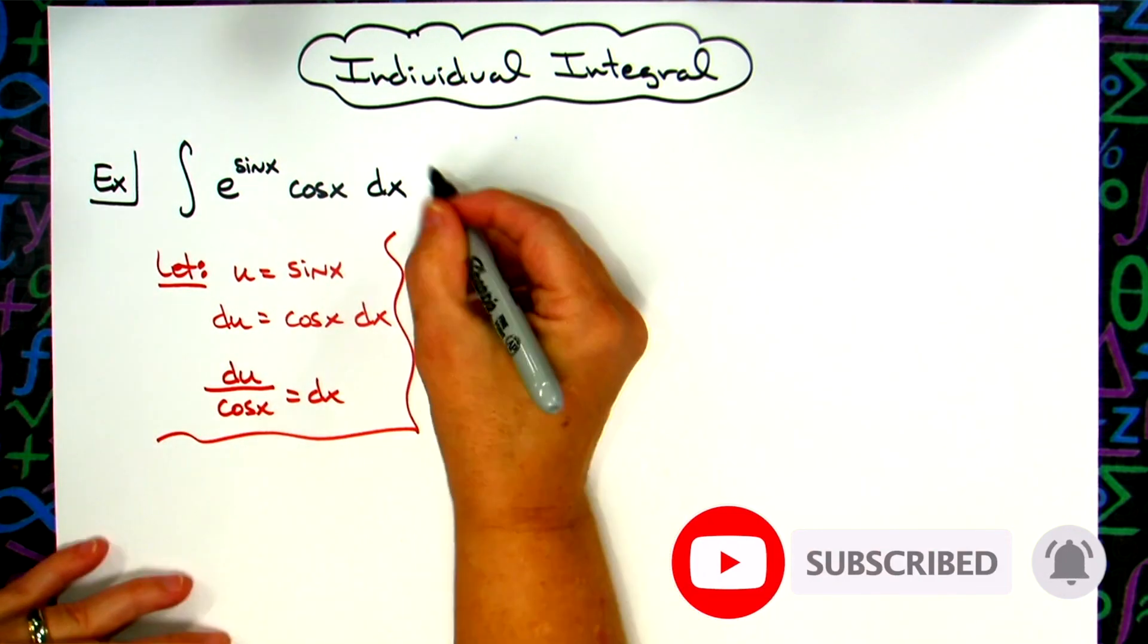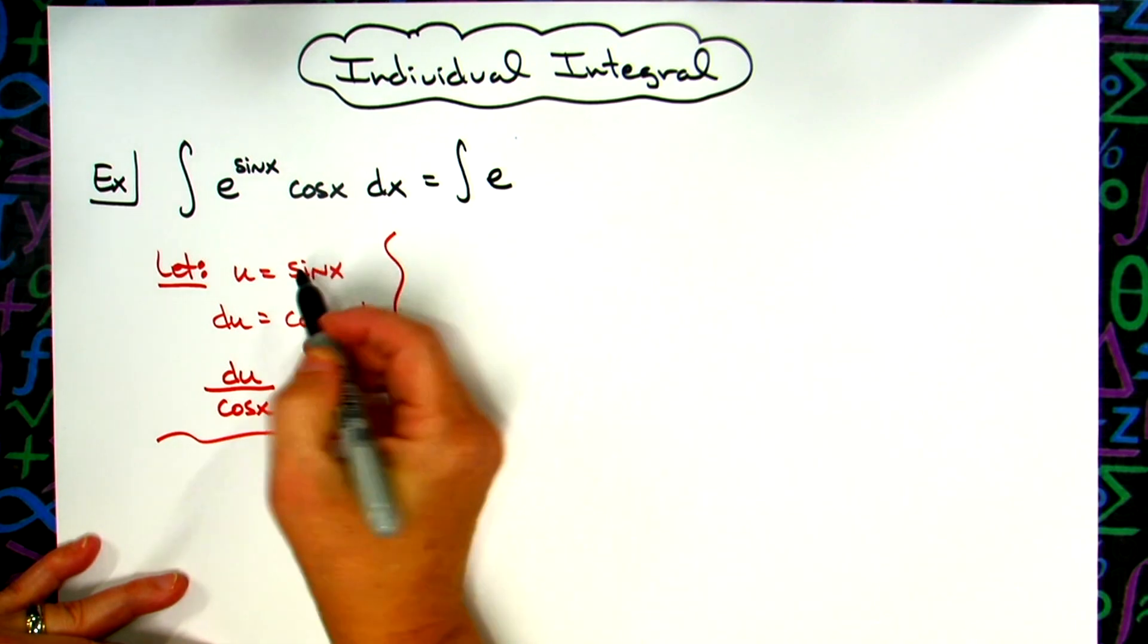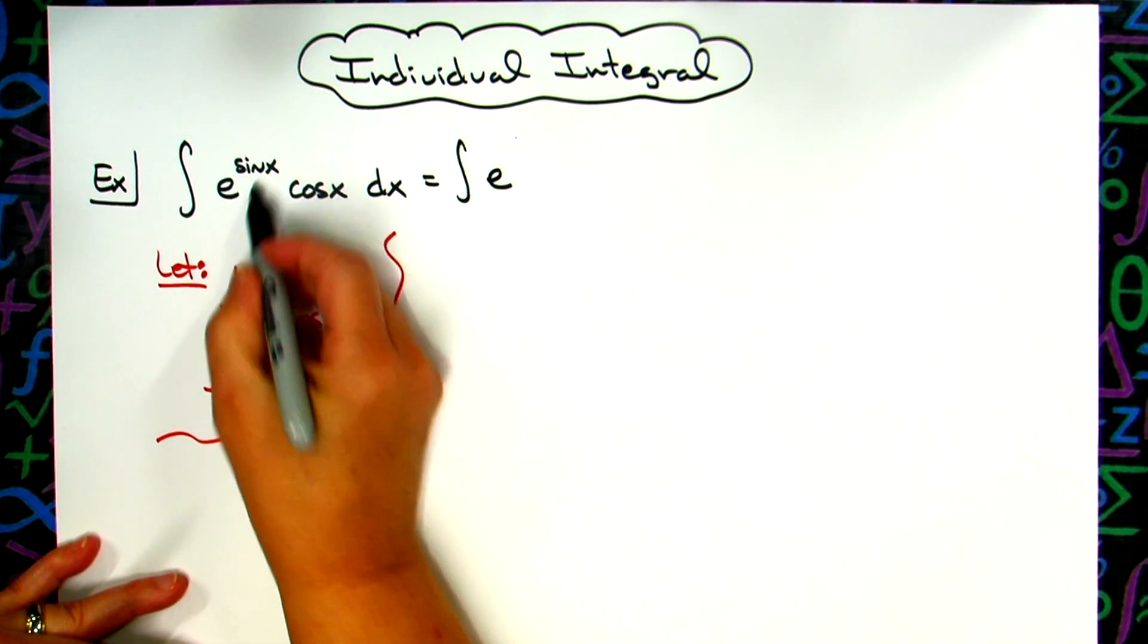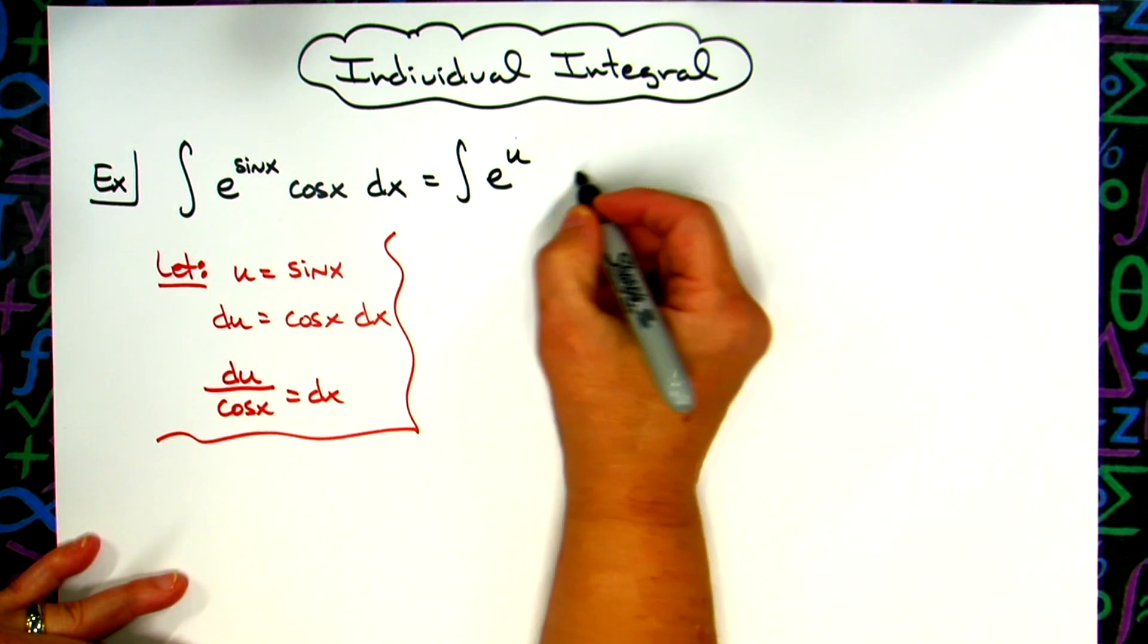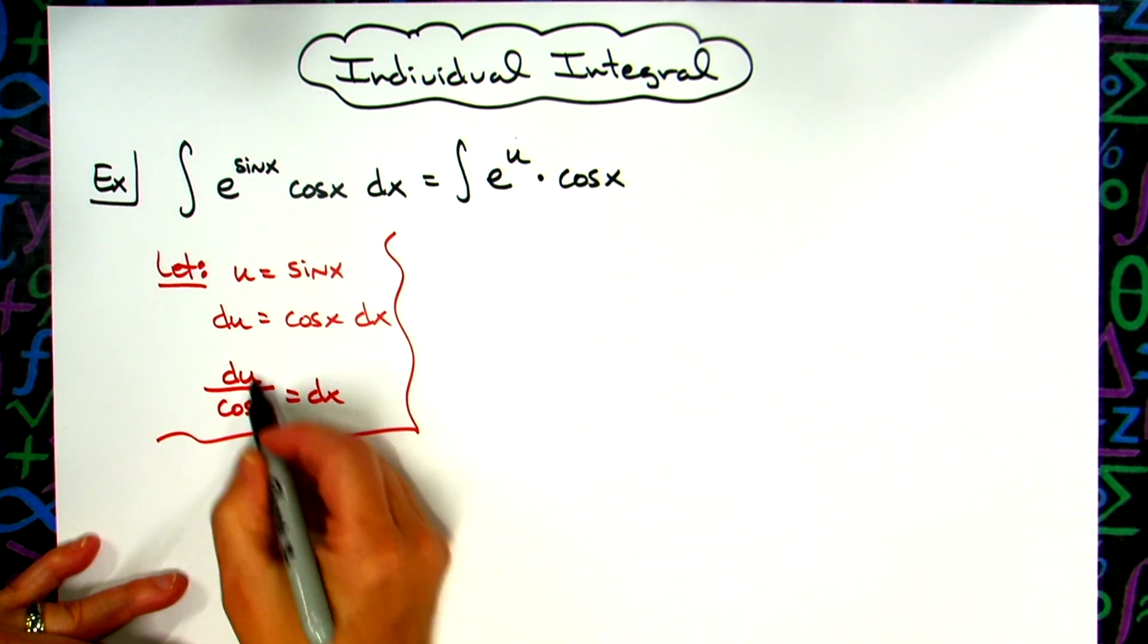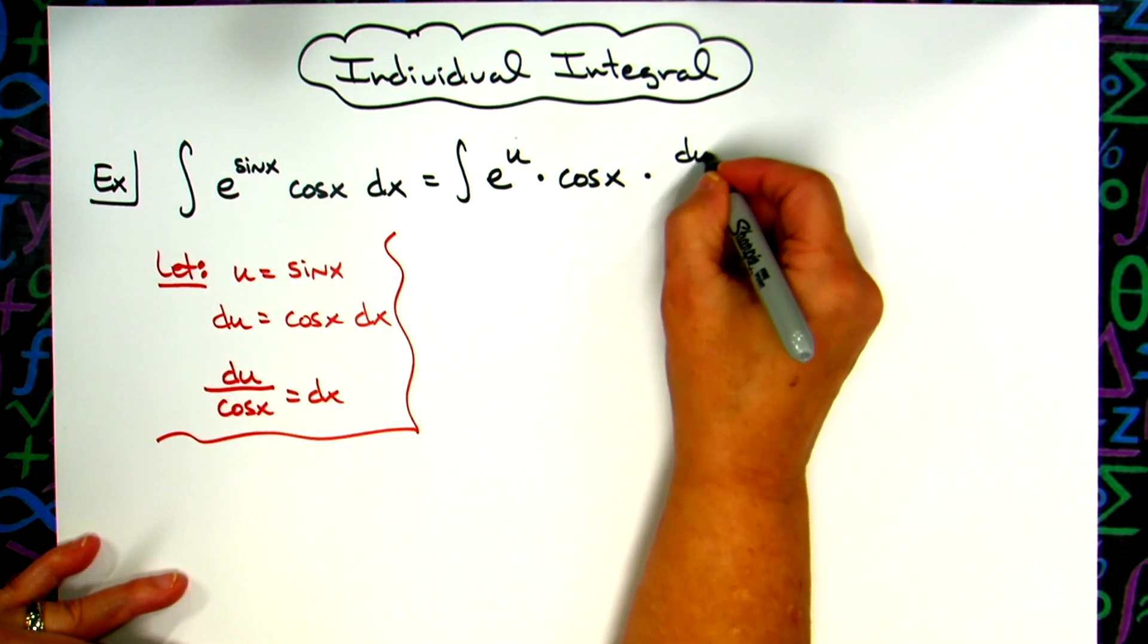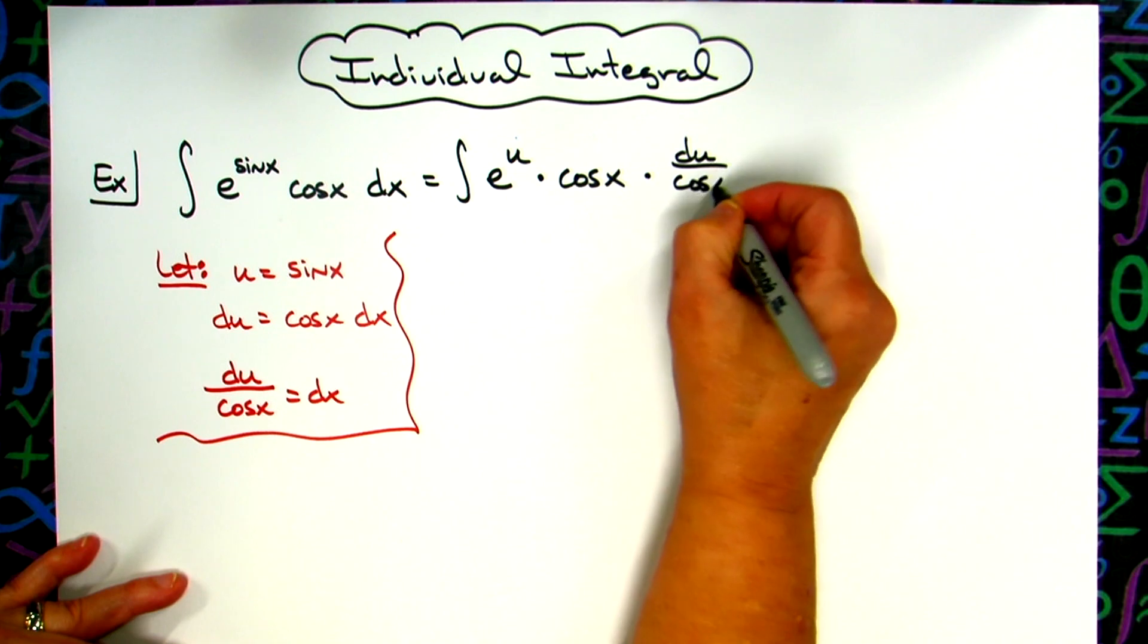We're going to start doing some substitutions. We're going to have the integral of e—we let sine x be u, so we're going to replace that with a u. We'll still have a cosine x. Our dx is going to get replaced with a du over cosine x.